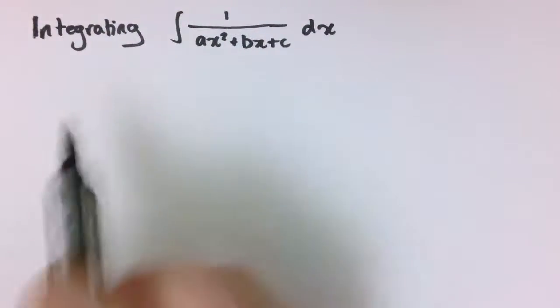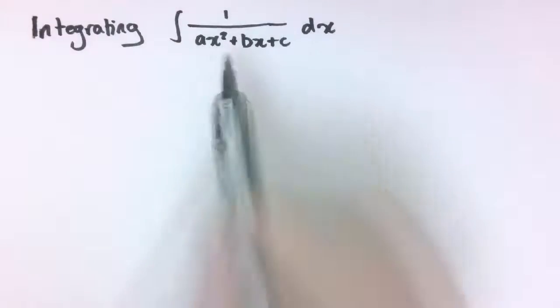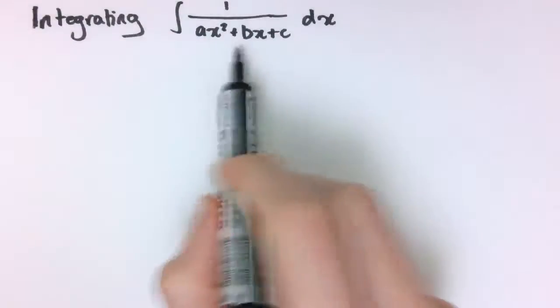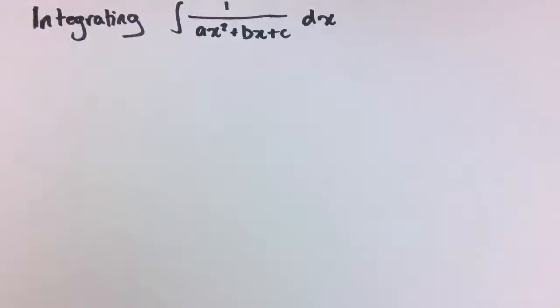In this video I'm going to show you how to integrate 1 over any quadratic function, ax squared plus bx plus c, where a, b, and c are constants.